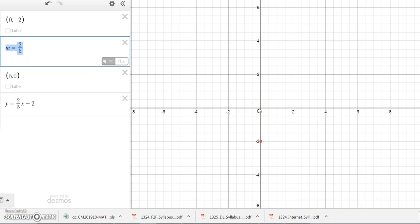I get a point here, which is actually the point (5, 0), and then all I have to do is connect them.